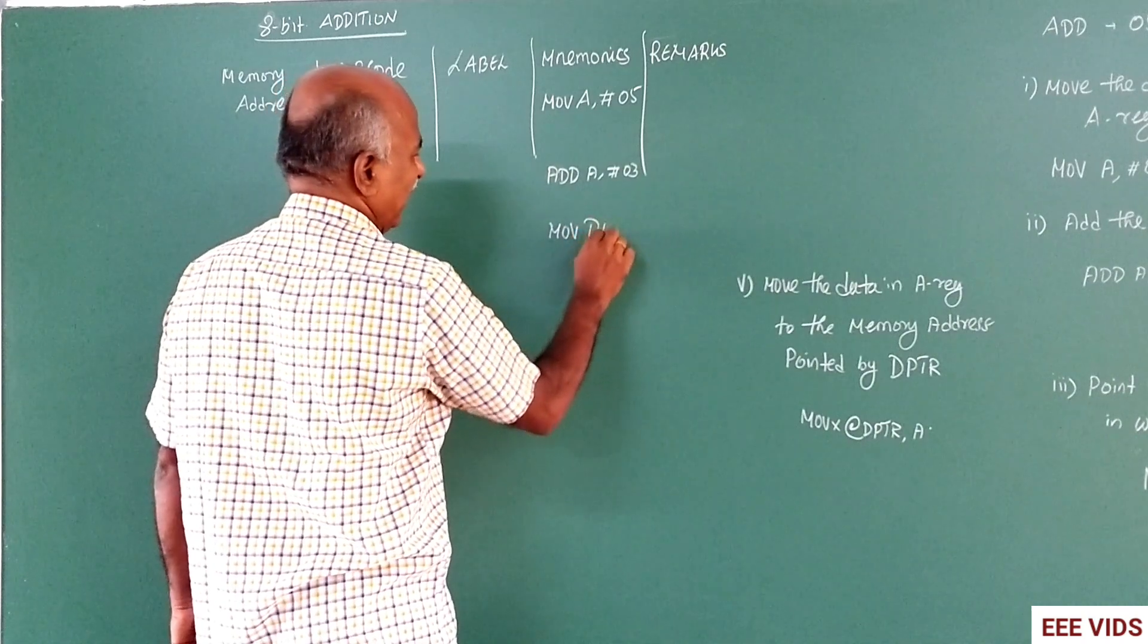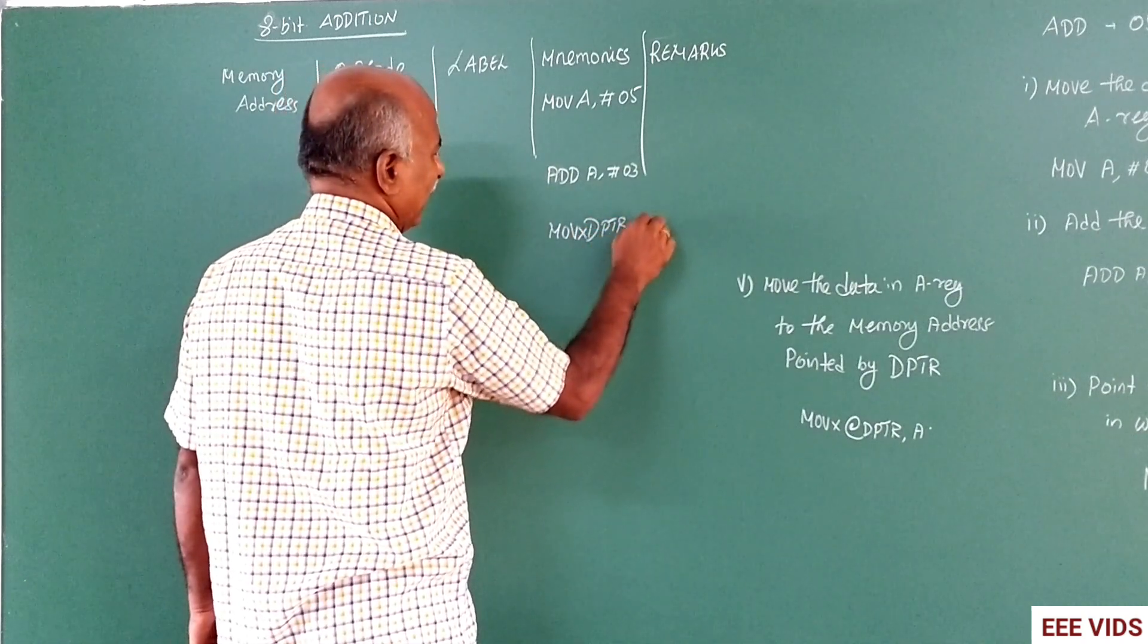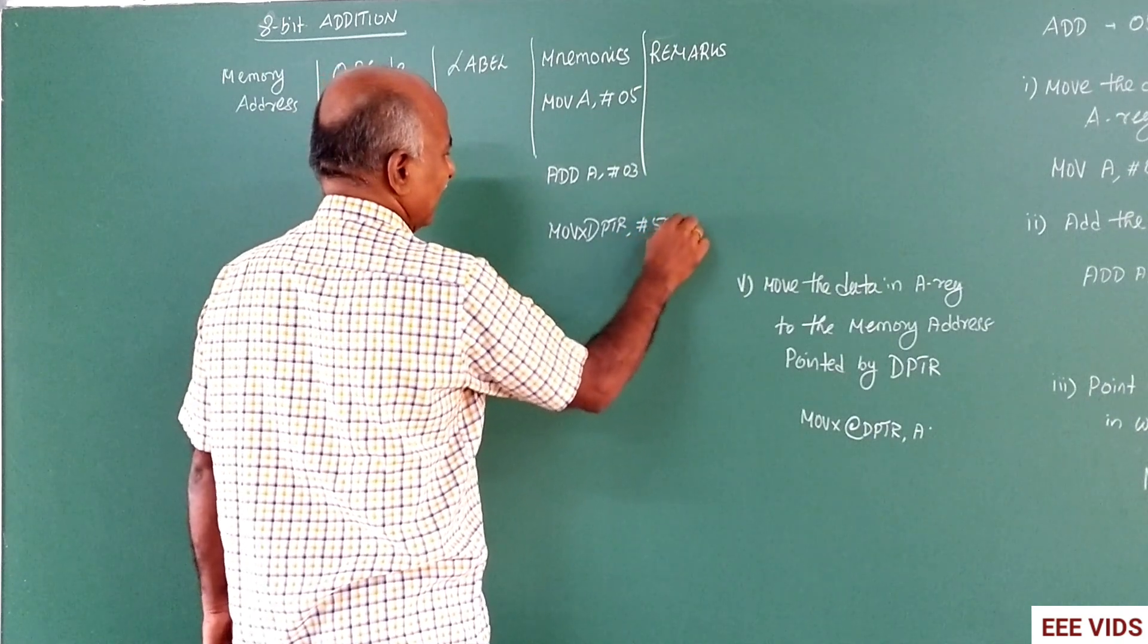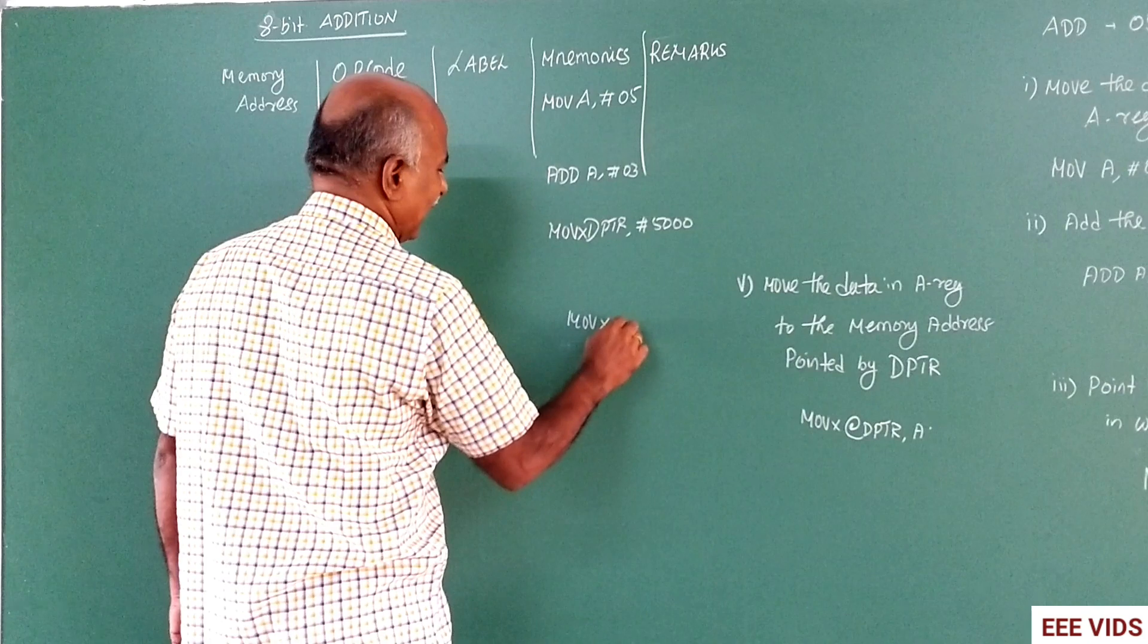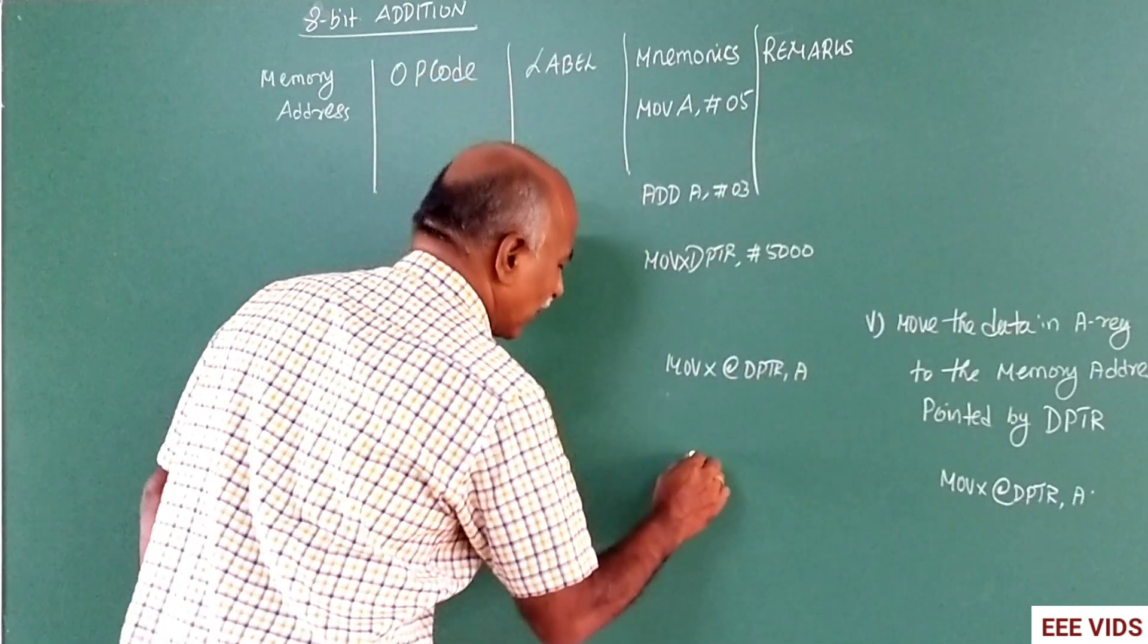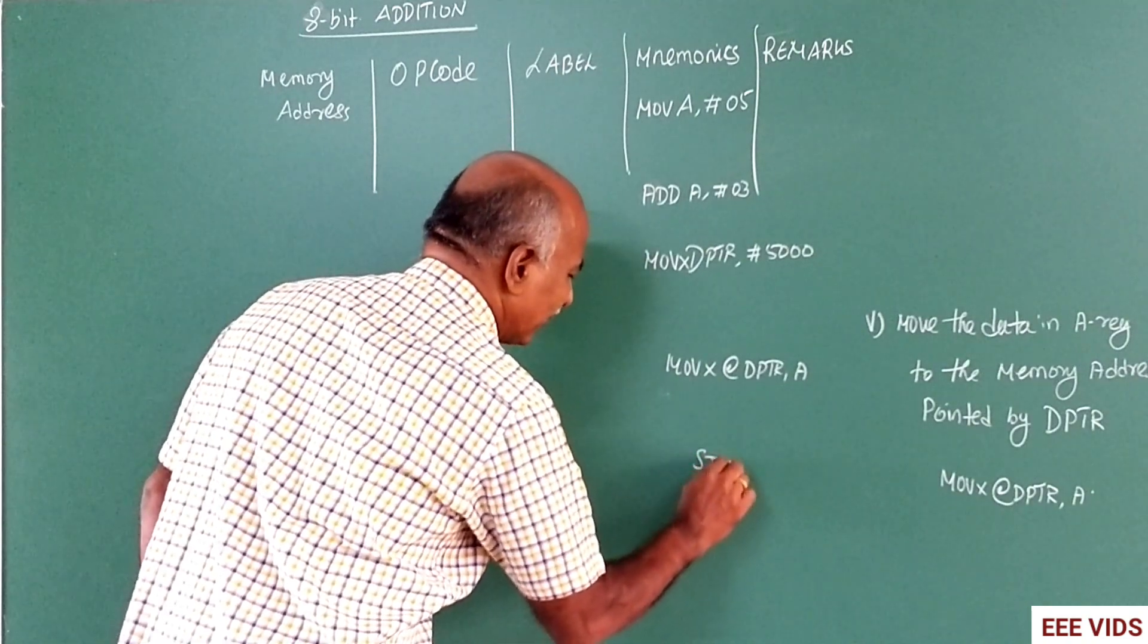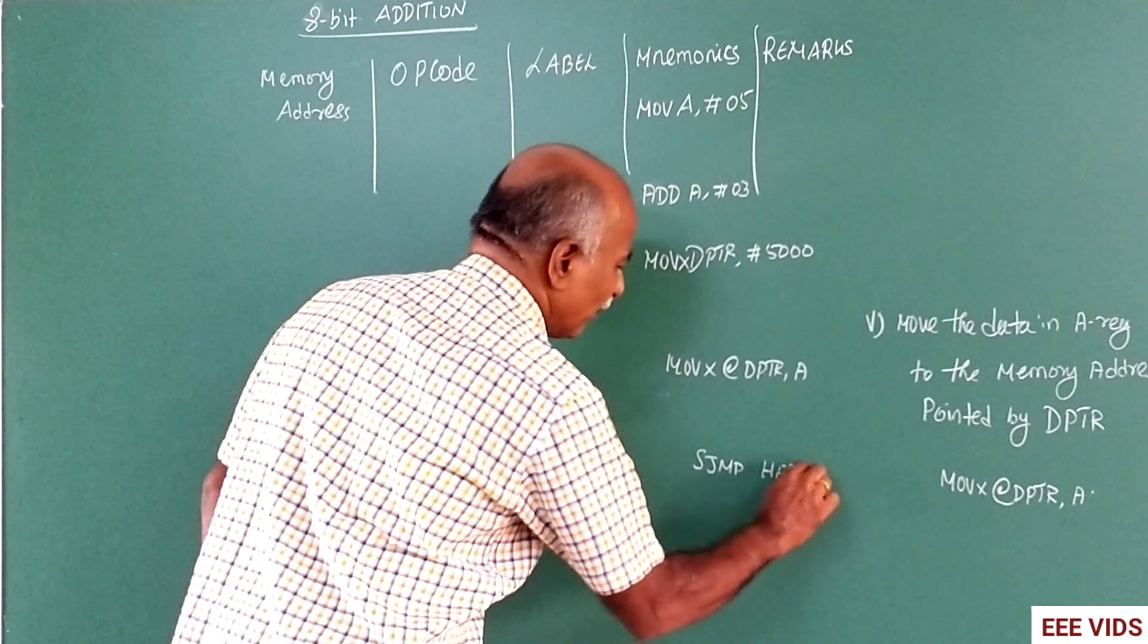MOV DPTR, MOV X@DPTR, comma 5000. ADD instruction. MOV X@DPTR comma A. Then program stops. SJMP to here, SJMP to here.